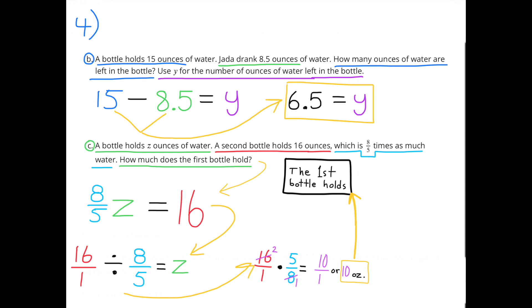B. A bottle holds 15 ounces of water. Jada drank 8 and five-tenths ounces of water. How many ounces of water are left in the bottle? Use y for the number of ounces of water left in the bottle. 15 ounces in the bottle minus 8 and five-tenths ounces of water that Jada drank will give you y, the number of ounces that are left in the bottle. And 15 minus 8 and five-tenths equals 6 and five-tenths. So there are 6 and five-tenths ounces of water left in the bottle.